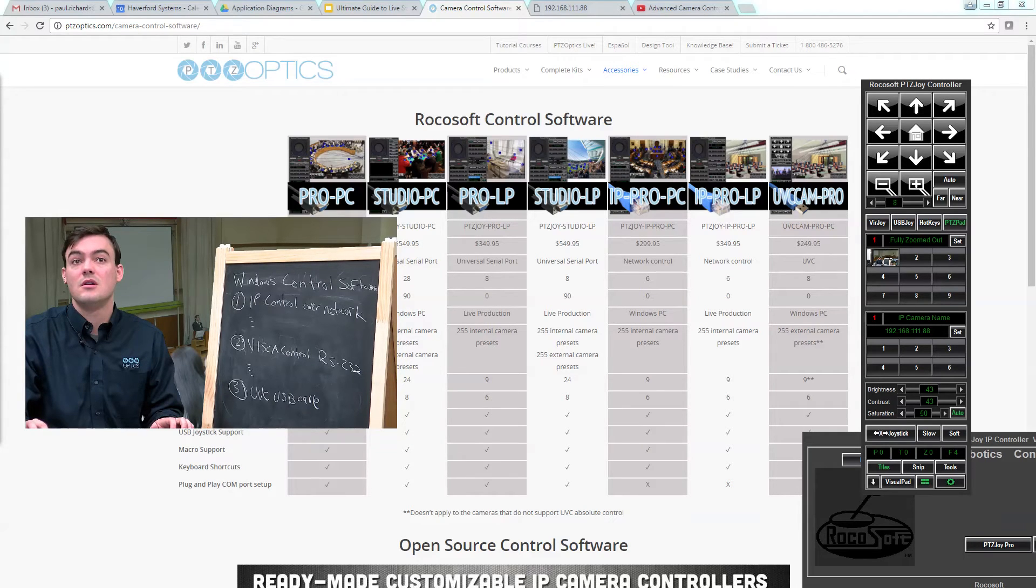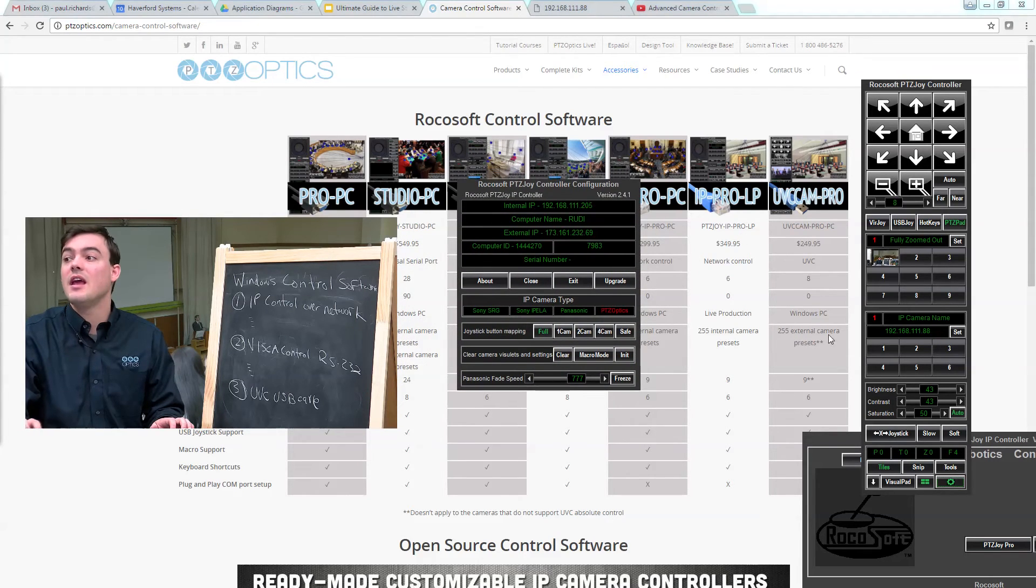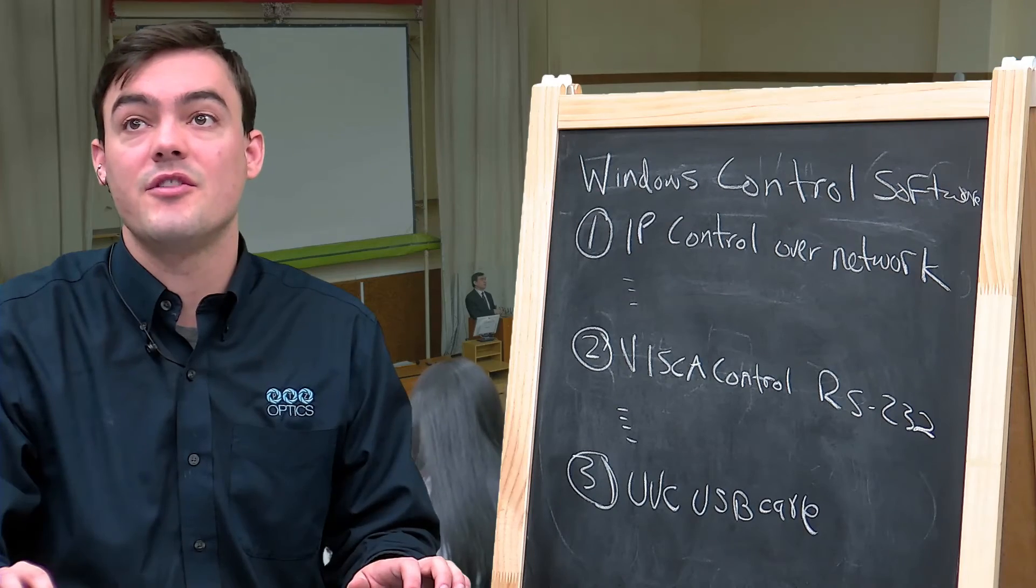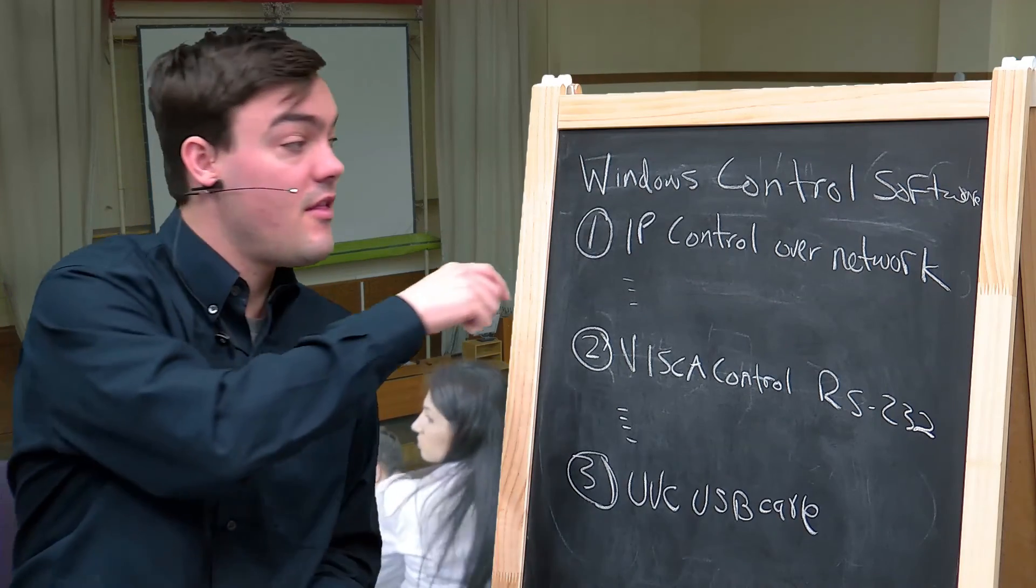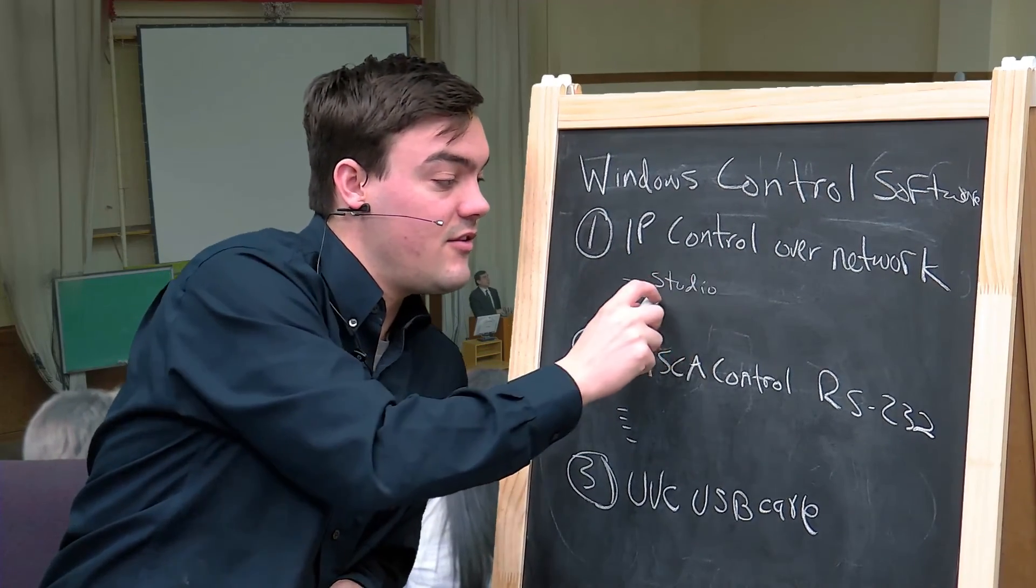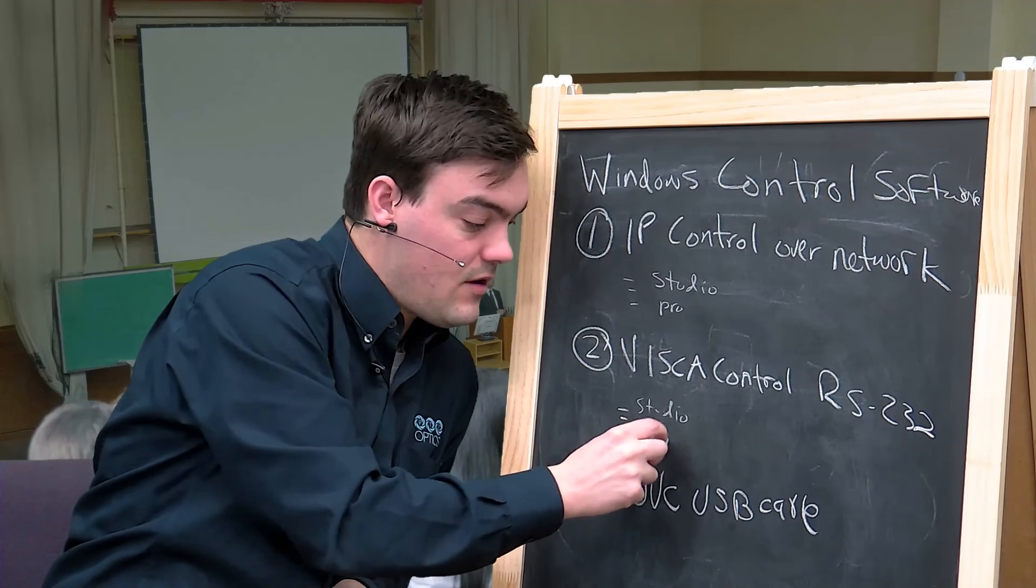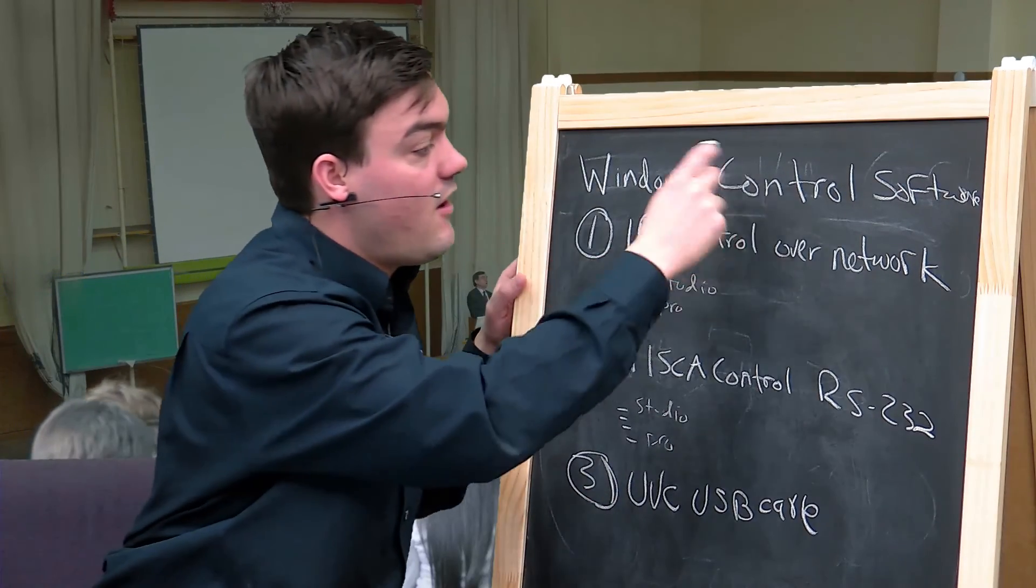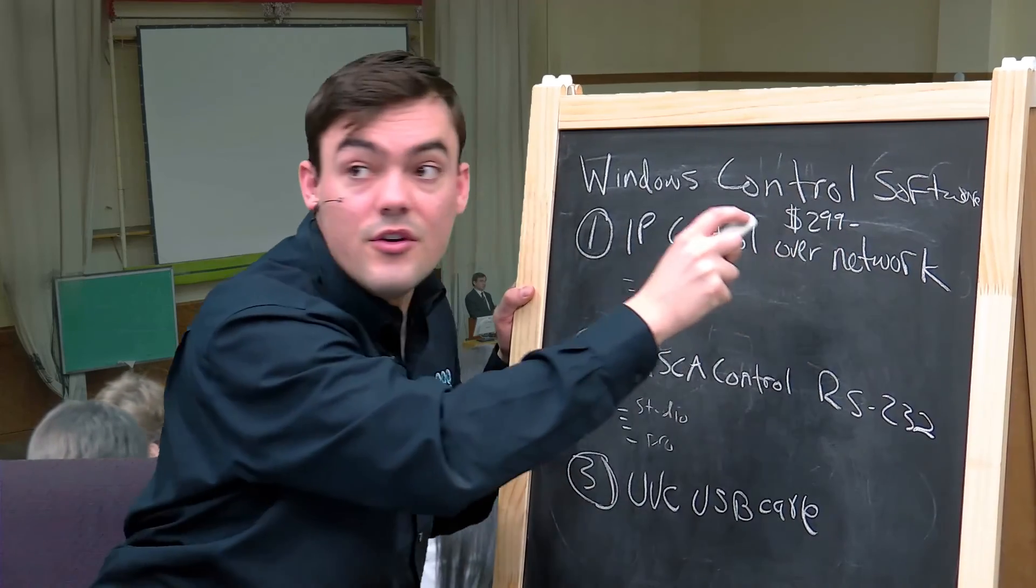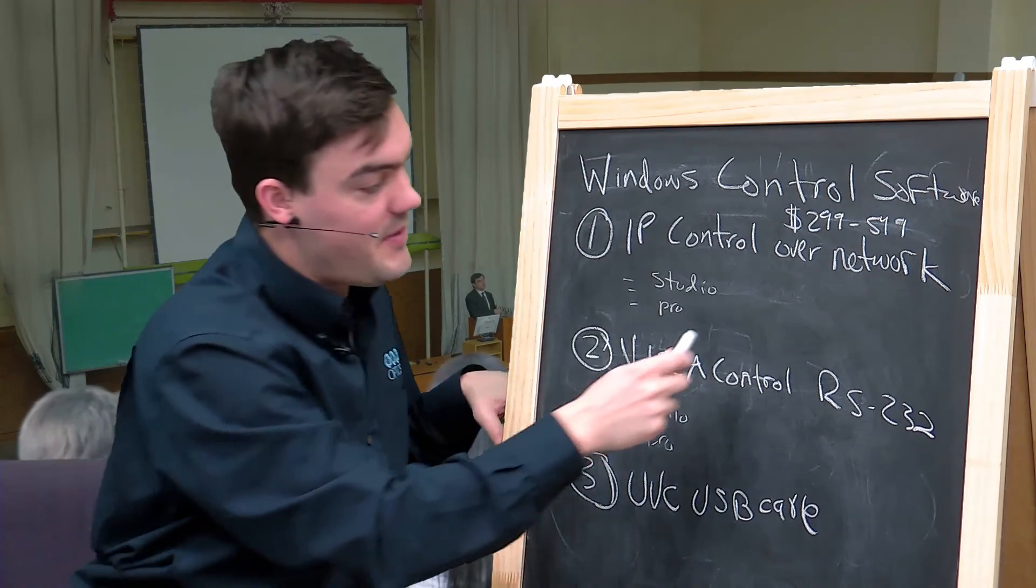The final thing I wanted to show was this here. Basically if you hit that cog there you can set up an external IP address. So let's just take a moment to talk about that. With the external IP, IP control over your network, we've got the studio and the professional that's the same for each of these. You can take a look at them, pricing starts at $2.99 overall so $2.99 to $5.49 is roughly the pricing.